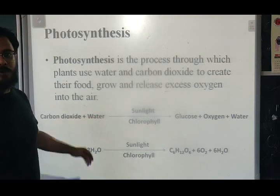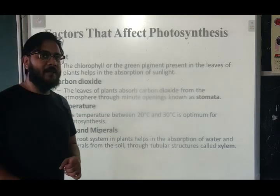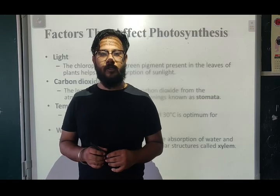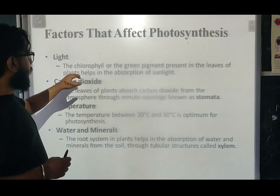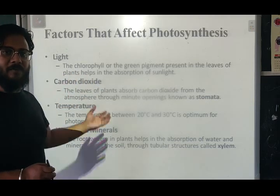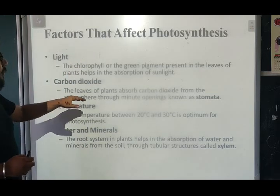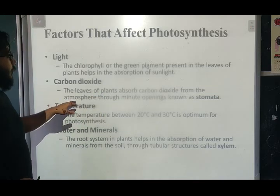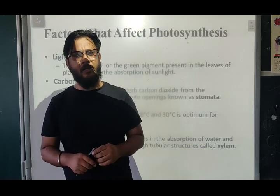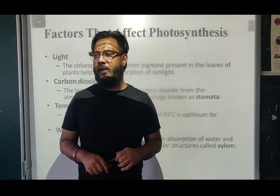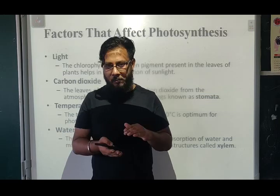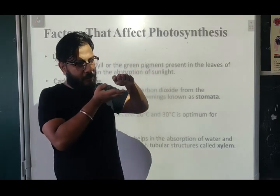The factors that affect photosynthesis are: light — photosynthesis happens in the presence of sunlight; chlorophyll — the green pigment in leaves helps absorb sunlight; and carbon dioxide — leaves absorb CO2 from the atmosphere through tiny openings called stomata, found on the underside of the leaf. Plants use these pores for gas exchange, similar to how we use our nose for breathing.